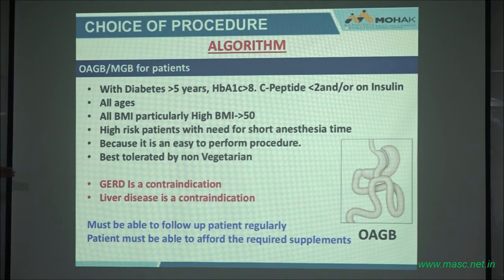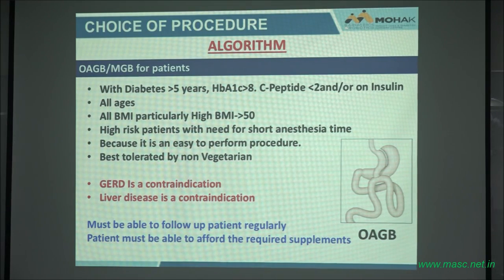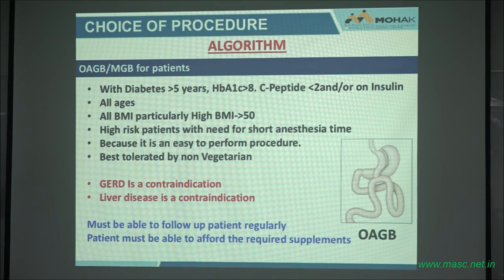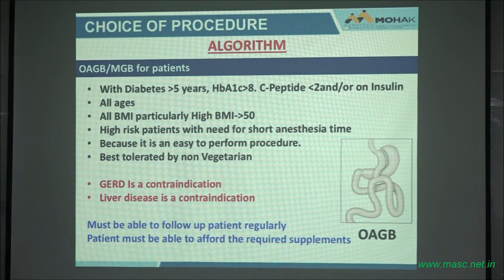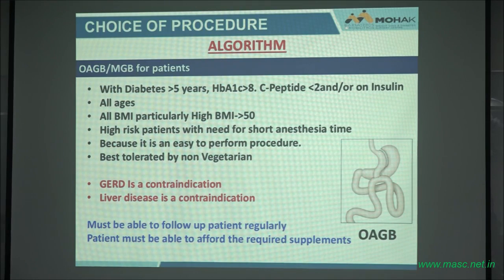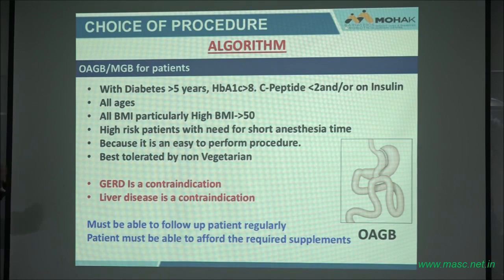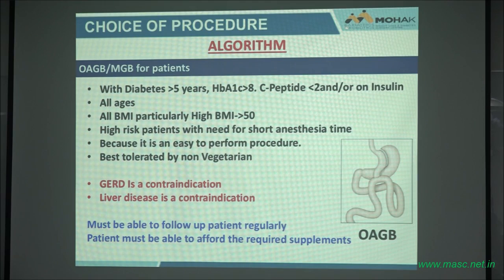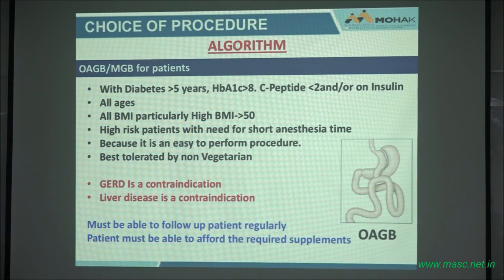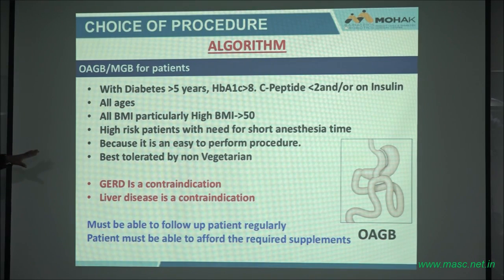The MGB, as I said before, is very good for patients who have long-term diabetes on insulin, low C-peptide level, all ages, and high BMI — and it's a simpler operation. Dr. Banderi does the procedure in 29 minutes; it takes me 62 minutes. But that is 62 minutes for the MGB and 90 minutes for the gastric bypass. So it's an easier procedure, and younger laparoscopic surgeons can do the same thing. It's an easy procedure to perform in high-risk patients.